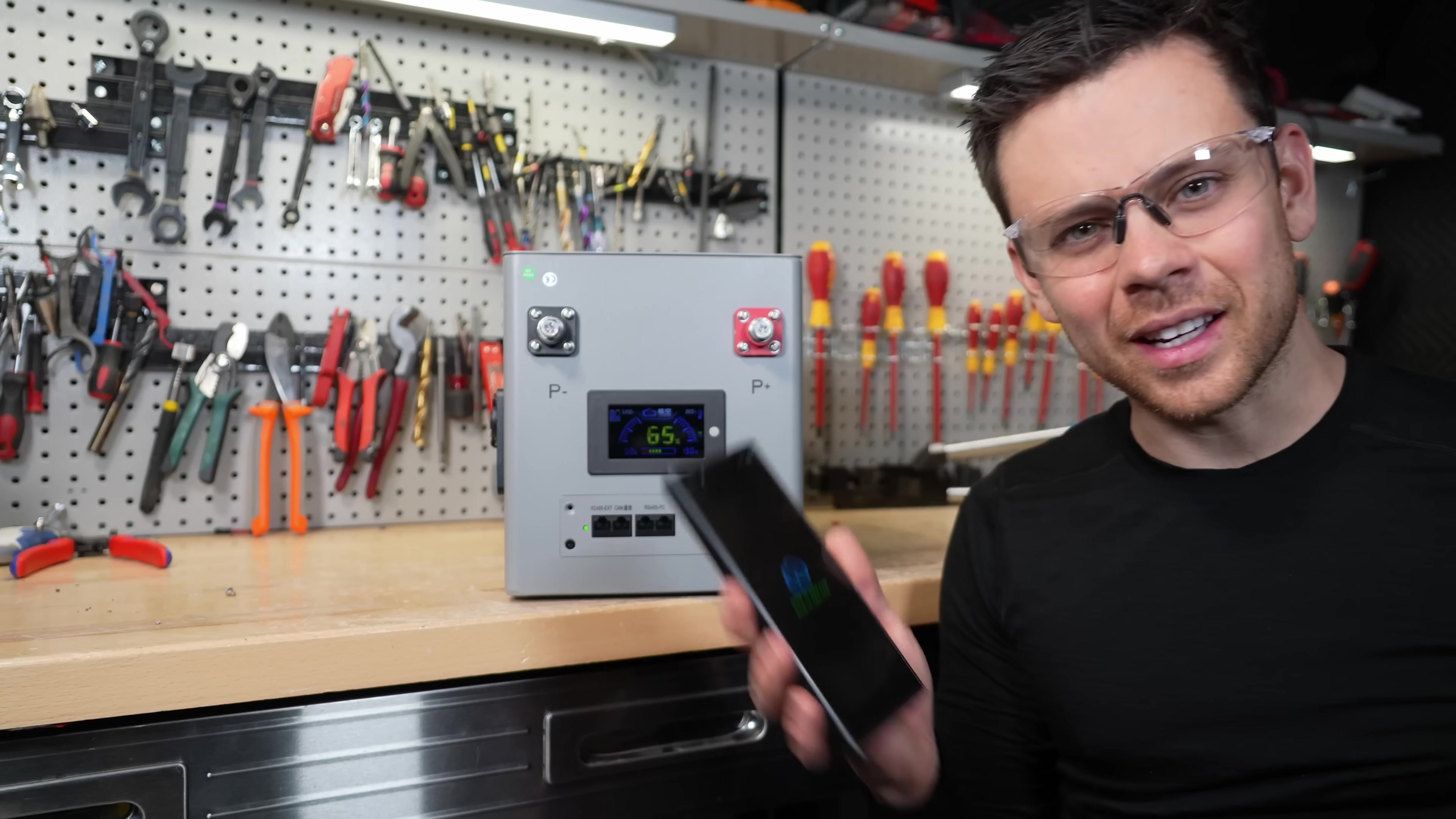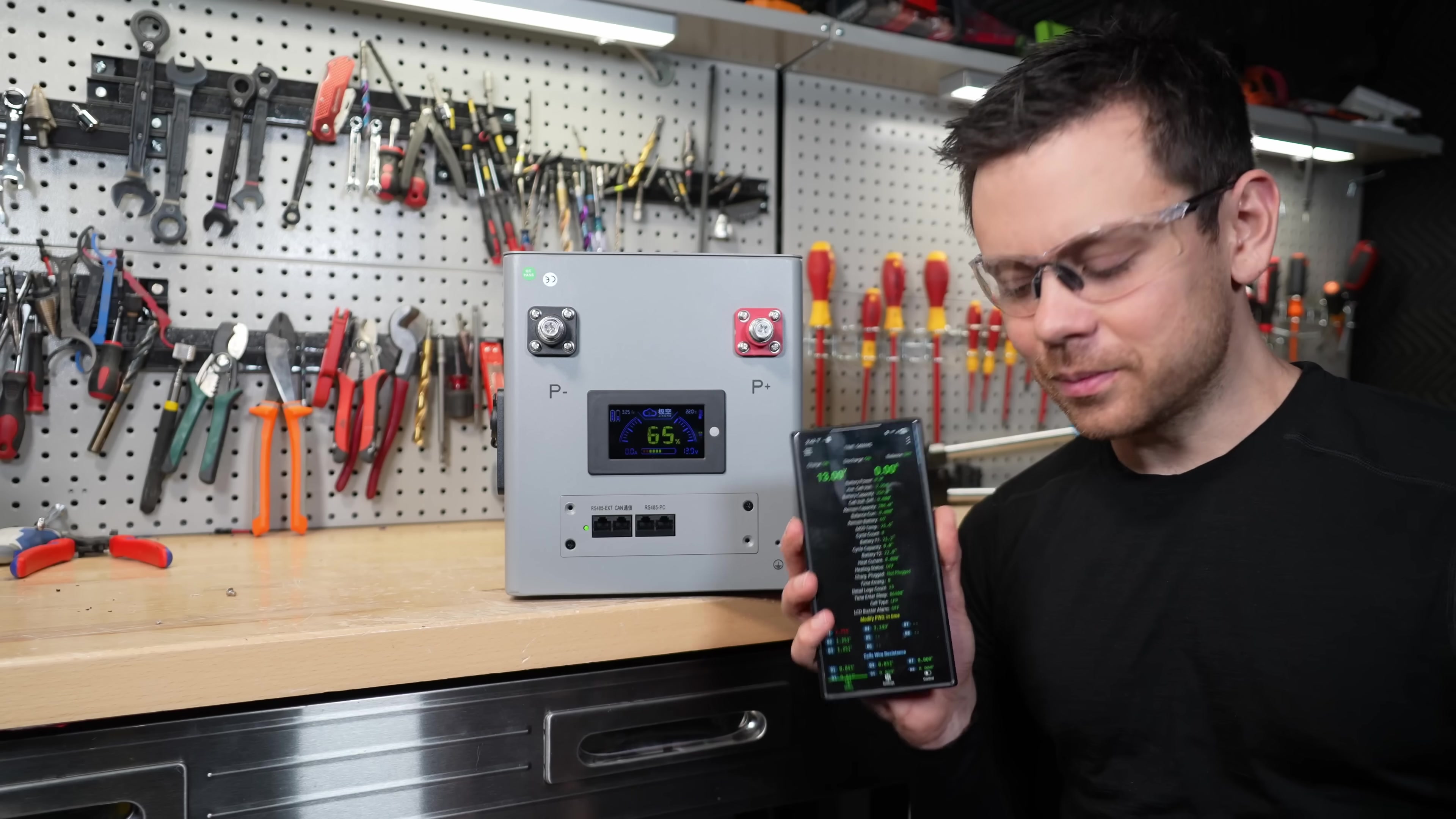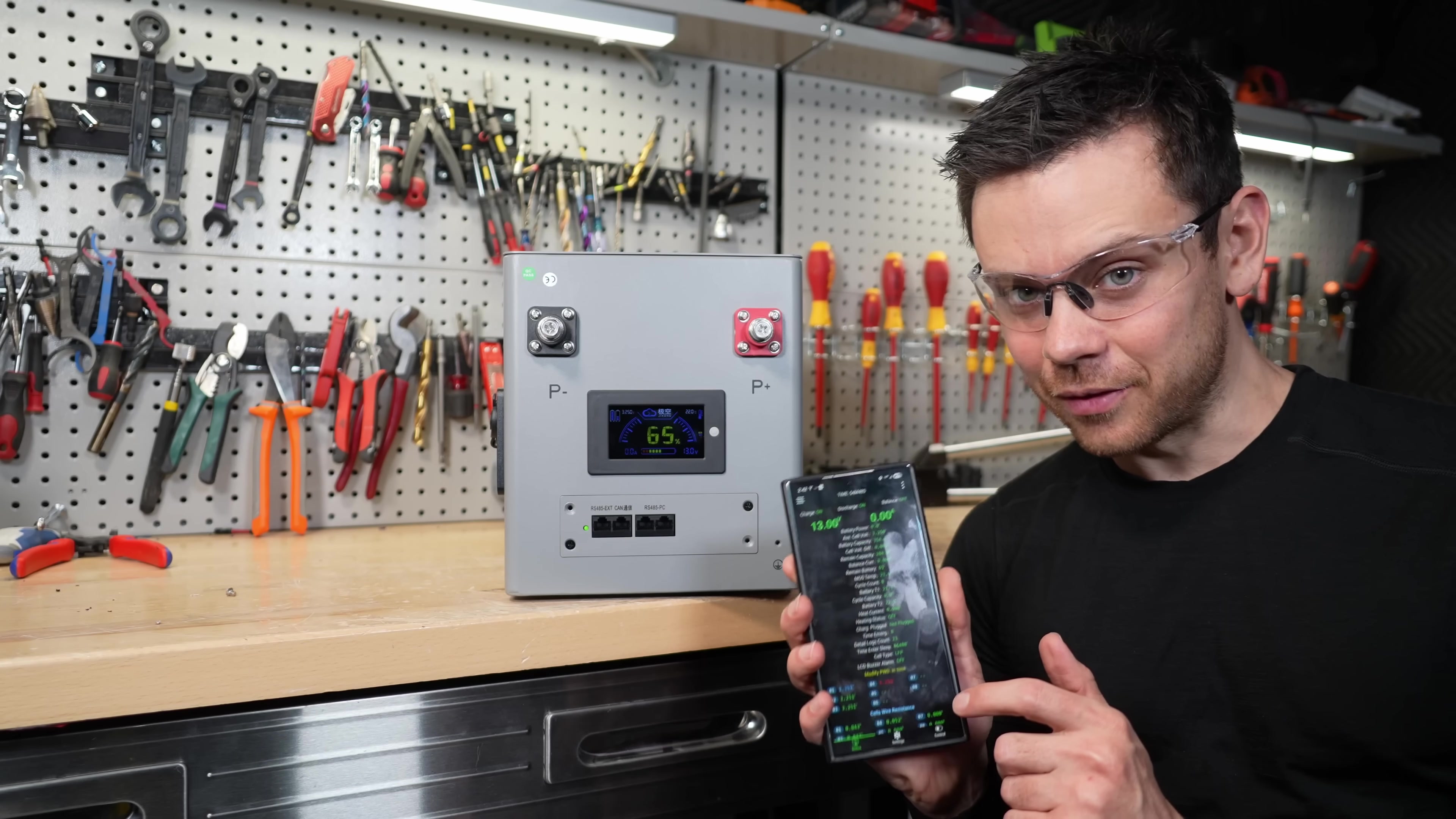I can barely read it. Let's see if it connects to the app. There we go. Because it's a JK, usually you need to set it to lithium iron phosphate.